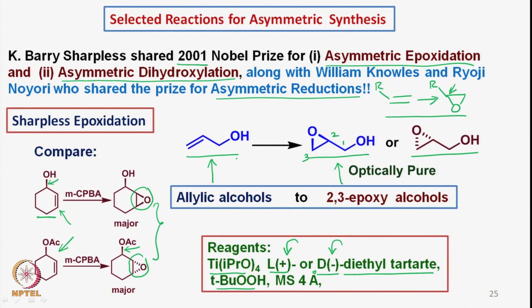We will stop today at this stage. In the next class, we will take up how the Sharpless epoxidation can actually be carried out, what exactly the mechanism is, and once we have got these epoxy alcohols as optically pure molecules, what the use is and how these molecules can be utilized for further synthetic transformations. See you next time, thank you and bye.